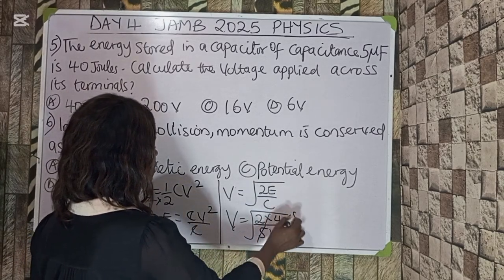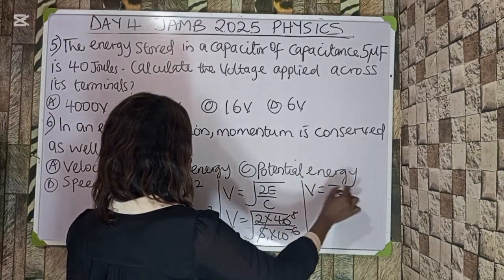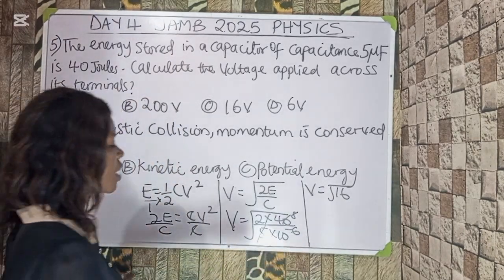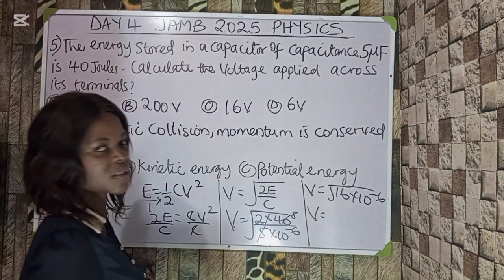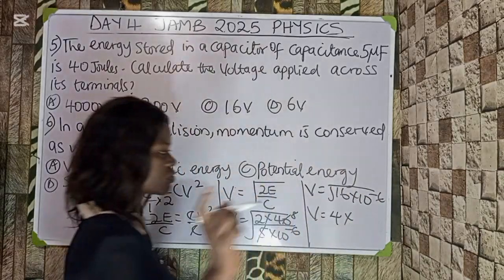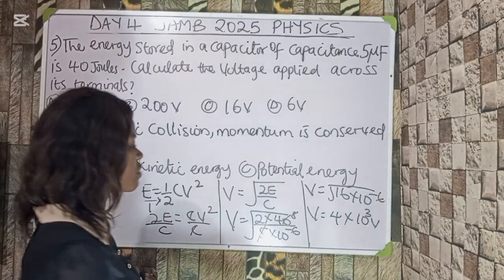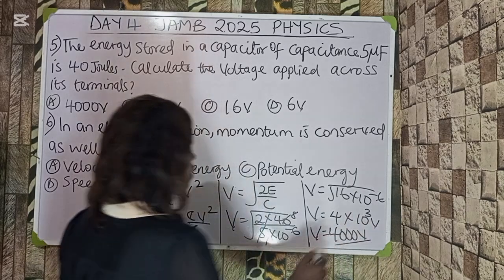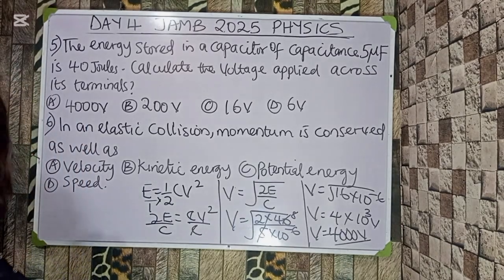Working it out: 40 / 5 = 8, and 8 × 2 = 16. So V = √(16 × 10⁶). Since √16 = 4 and √(10⁶) = 10³, we get V = 4 × 10³ = 4000 volts. The correct option is A.